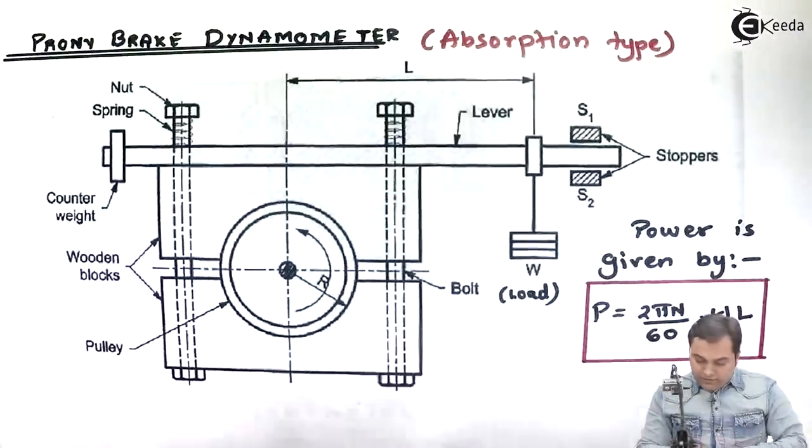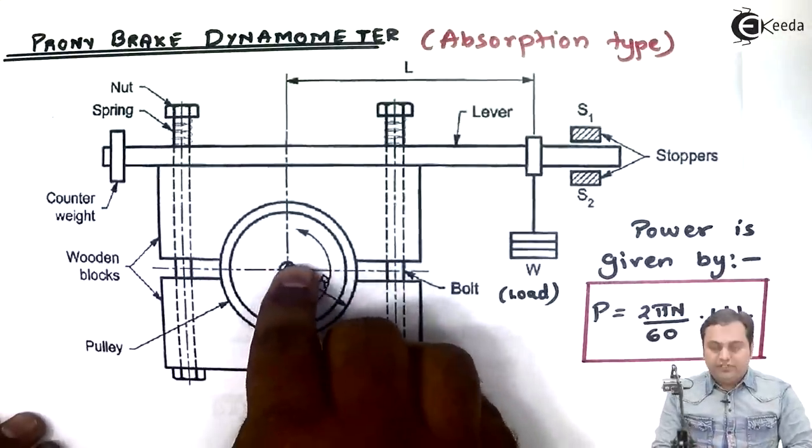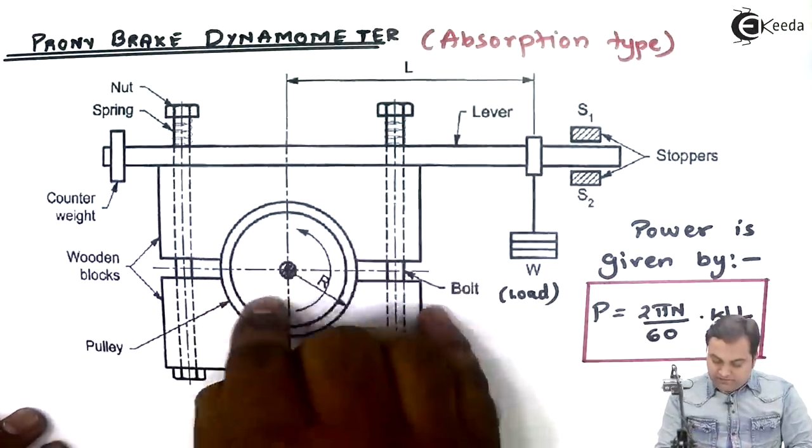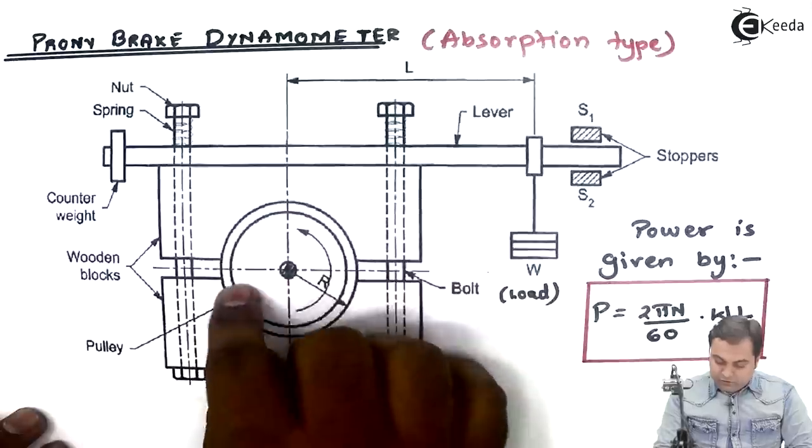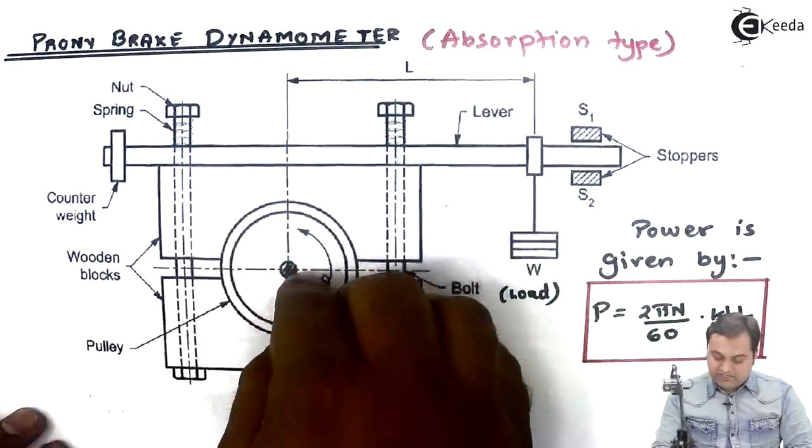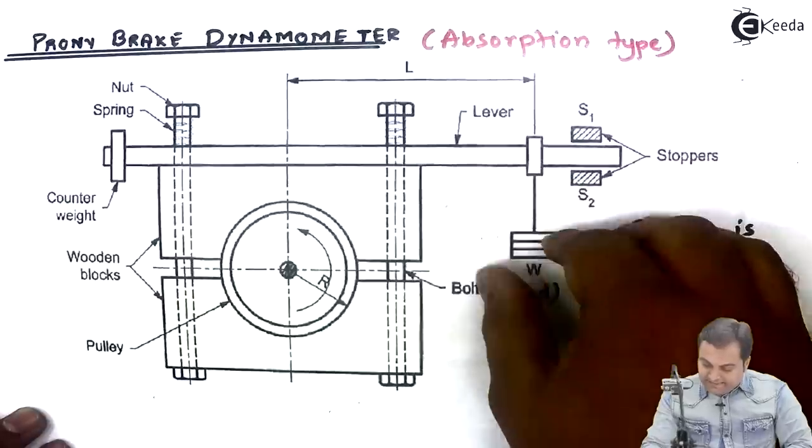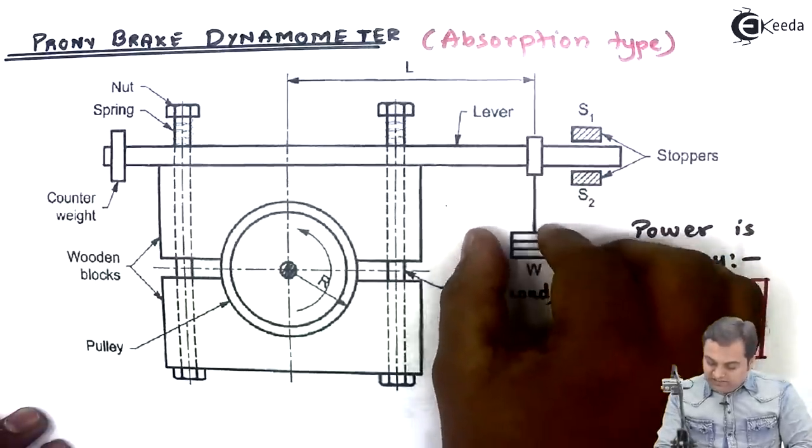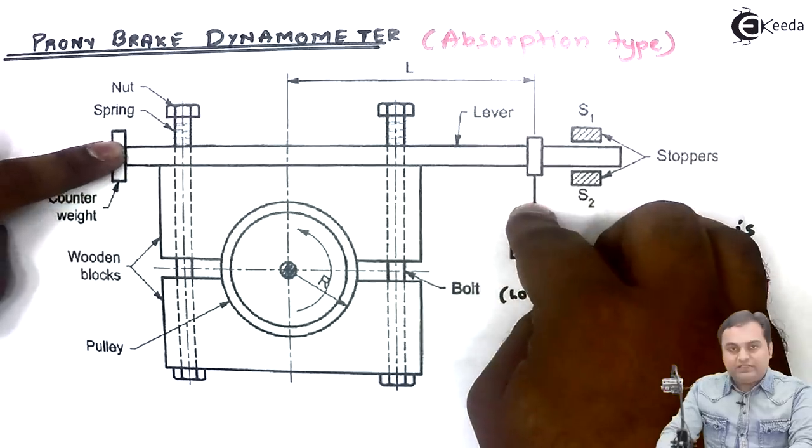How it functions - at first the shaft is rotating, we have mounted the brake drum so this brake drum or pulley will also rotate in anti-clockwise direction. We will be attaching weights here, once we attach weight the lever will be moving in the downward direction.